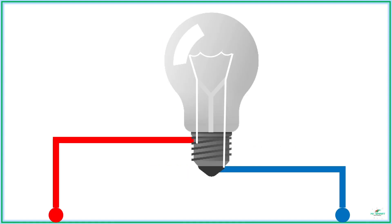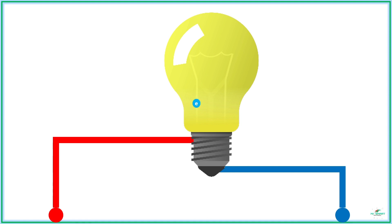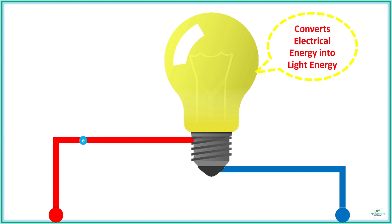We know that electric current is the flow of electrons through a conductive material, and the force that tends the electrons to flow is known as potential difference. When the current flows through a load, it converts electrical energy into other forms of energy. For example, when current flows through a tungsten filament bulb, the electrical energy is converted into light energy.